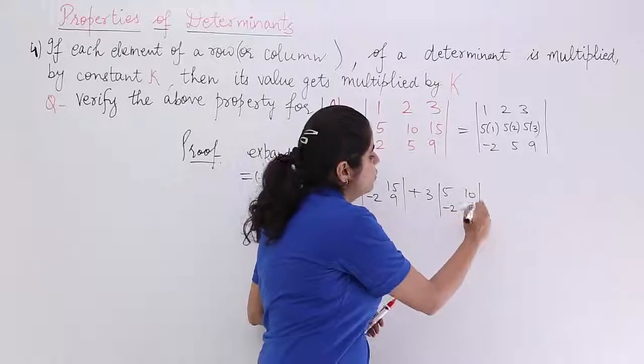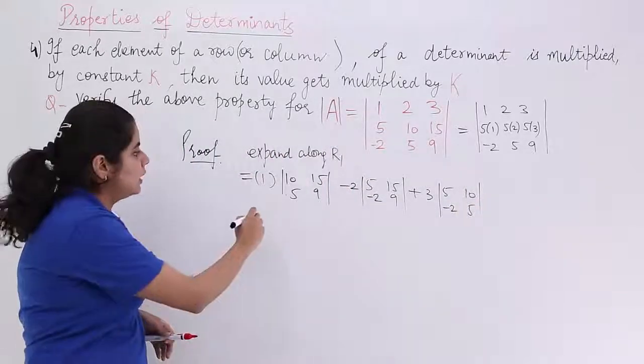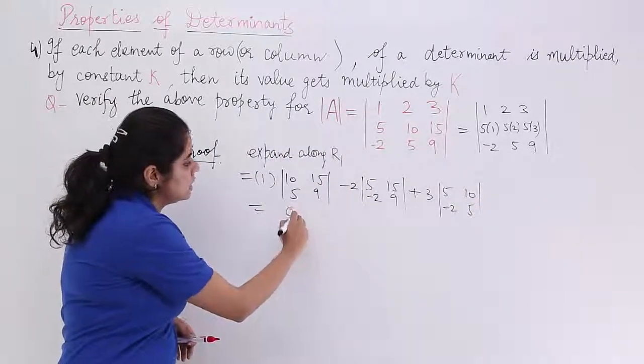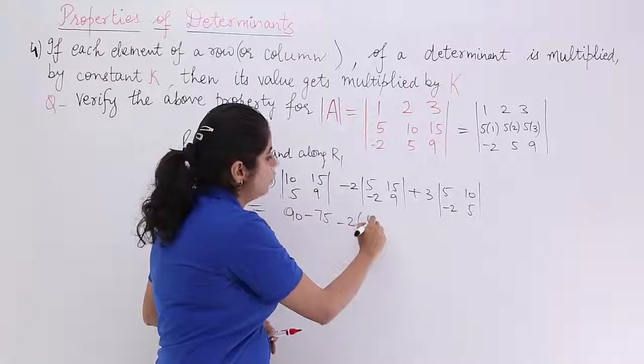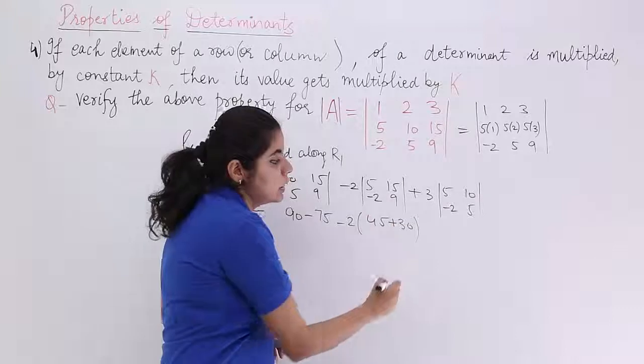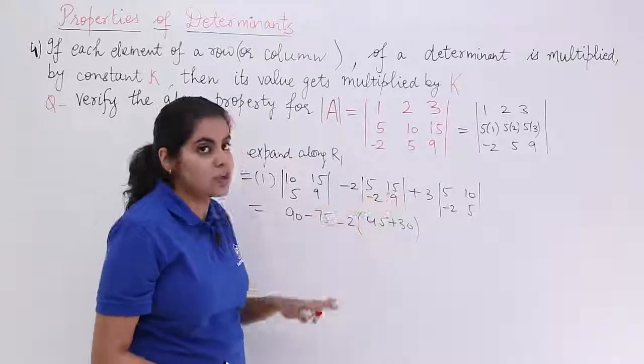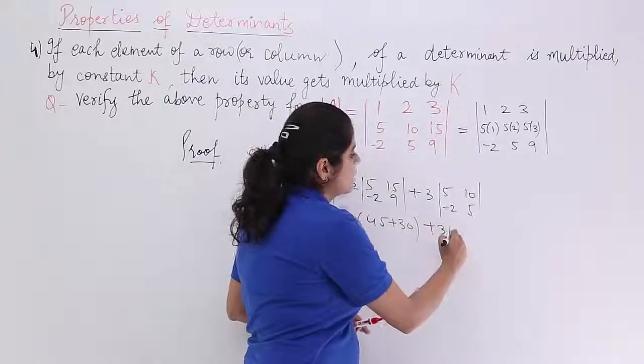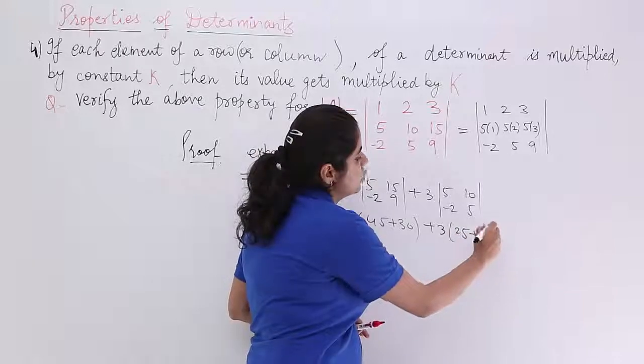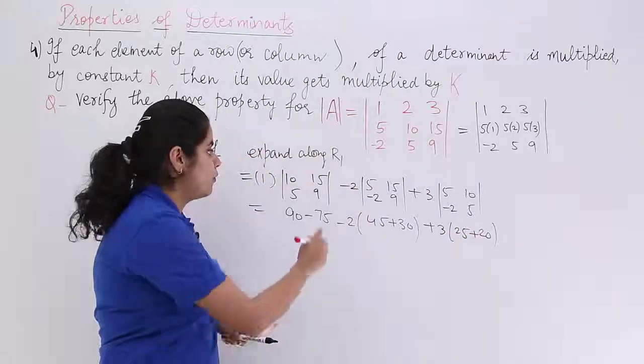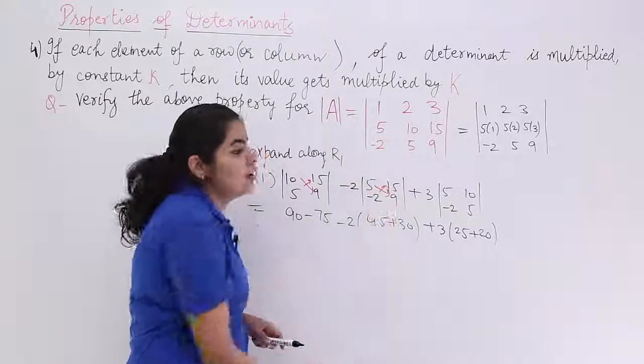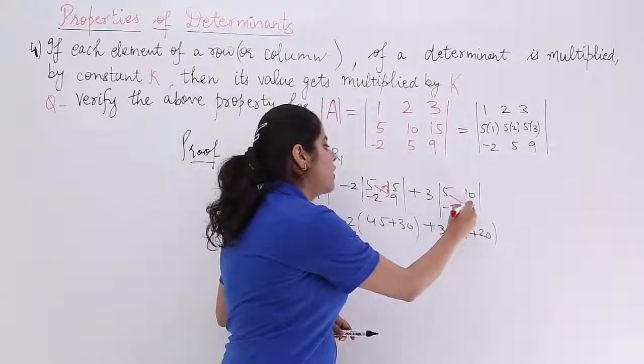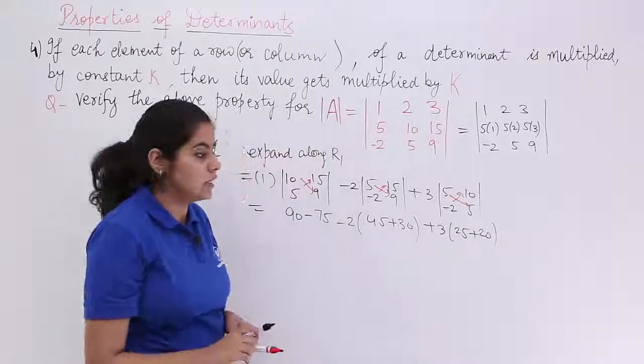We have to just cross-multiply. So it is 10, 9 is 90, minus 75. Next is minus 2, 45, plus 30. We are just cross-multiplying. Last but not the least is plus 3 and it is 25, plus 20. 10, 9 is 90, 5, 15 is 75, 5, 9 is 45, 2, 15 is 30, 5, 5 is 25, 10, 2 is 20.